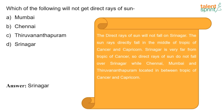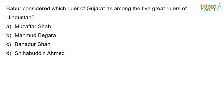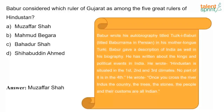Babur considered which ruler of Gujarat as among the five greatest rulers of Hindustan? The answer is Mahmud Shah I. Babur wrote his autobiography titled Tuzk-i-Babari in his mother tongue Turkish. He gave a description of India in his biography, writing about kings and political events. He wrote that Hindustan is situated in the first, second, and third climates, and once you cross the river Indus, the country, the trees, the stones, the people and their customs are all Indian.